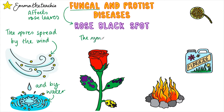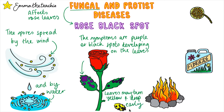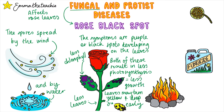The symptoms of rose black spot are in the name — there are purple or black spots developing on plant leaves. The leaves often turn yellow and can drop off the plant earlier than normal. Both of these symptoms result in less photosynthesis, as having purple or black spots means there's less chlorophyll in the leaf, and having fewer or yellow leaves also reduces the amount of chlorophyll. This results in less growth of the plant and can even mean that there are fewer or smaller roses.